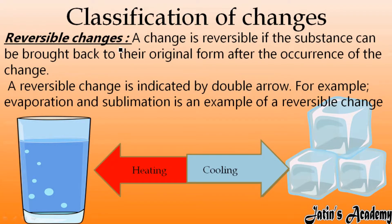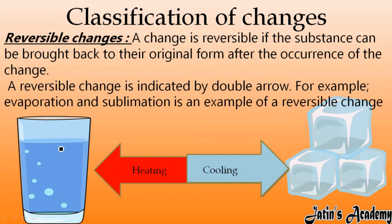Next we are having reversible changes. A change is reversible if a substance can be brought back to its original form after the occurrence of change. For example, here some ice cubes are there. When I heat the ice cube it will convert into water, and when I cool the water it will again convert into ice.